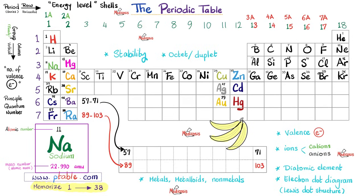Now let's go vertically — we call this a group, or a family of elements. Group one has one electron in the outermost shell, called the valence shell. Group two has two electrons. Group 3A or 13 has three electrons. Group 17 or 7A has seven electrons in the outermost shell. Group 18, the noble gases, have eight electrons in the outermost shell. If you have eight electrons in your outermost shell, you are called stable — this is the octet rule. Octet means eight.